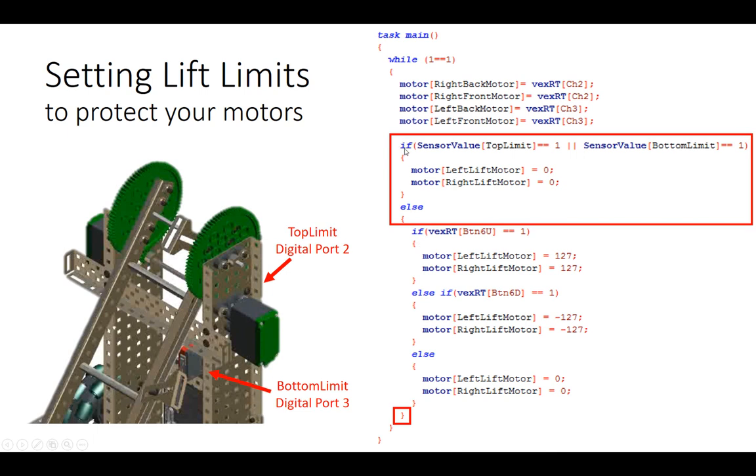What we have is we're saying if this sensor value for top limit equals one, and this means or, or this sensor value for bottom limit equals one, set my motor to zero, else just run the regular code. What that does is whenever this is pressed or that one's pressed, all the motors stop and it never sees the rest of the code. It's a good protectant for your robot.